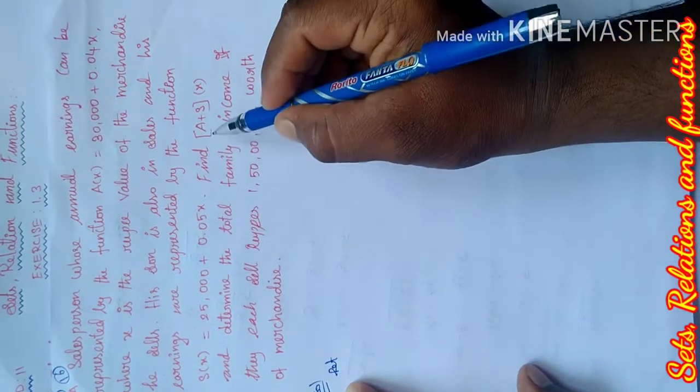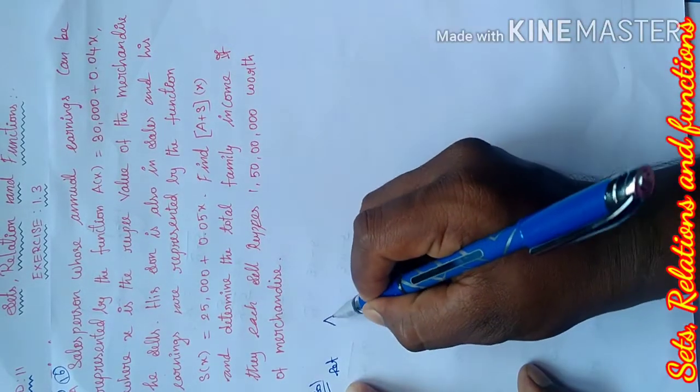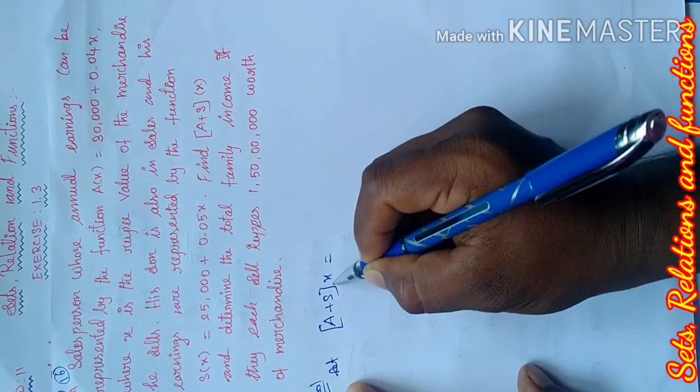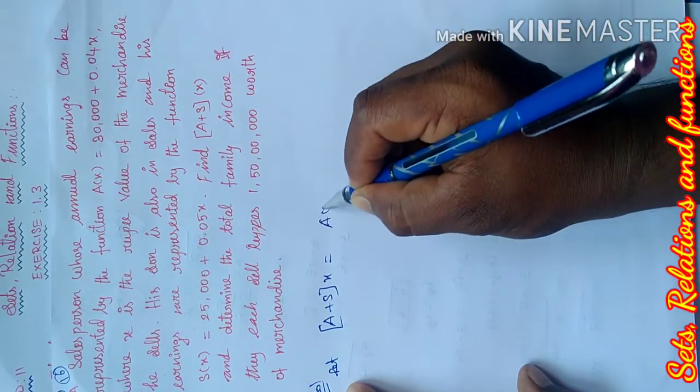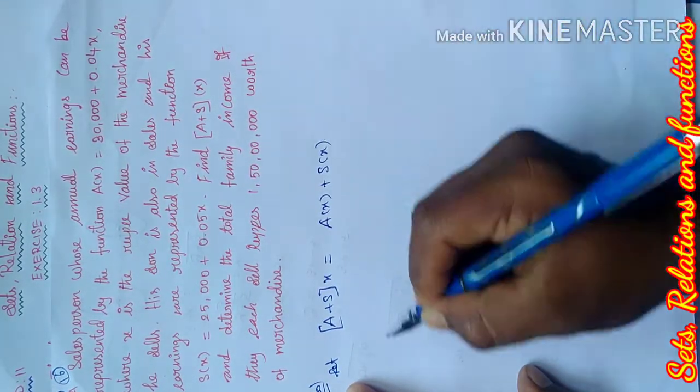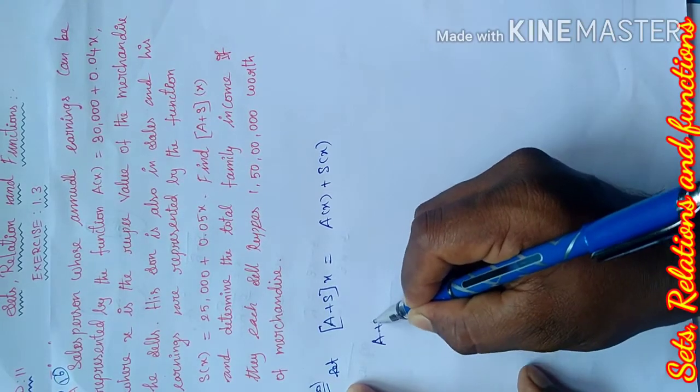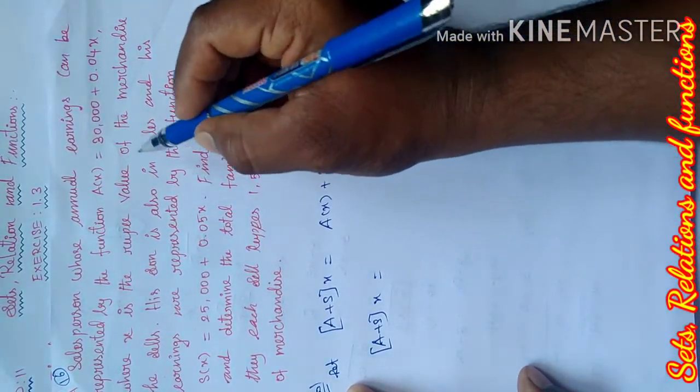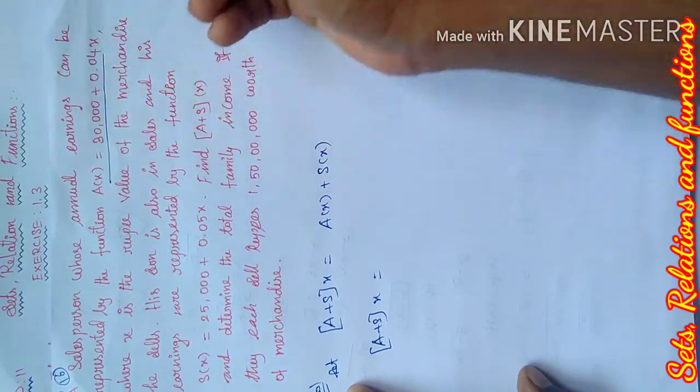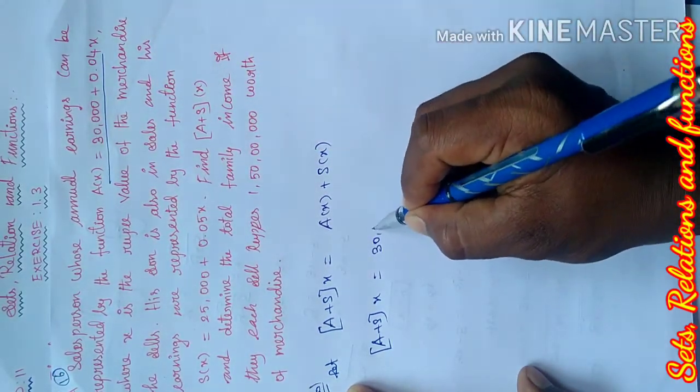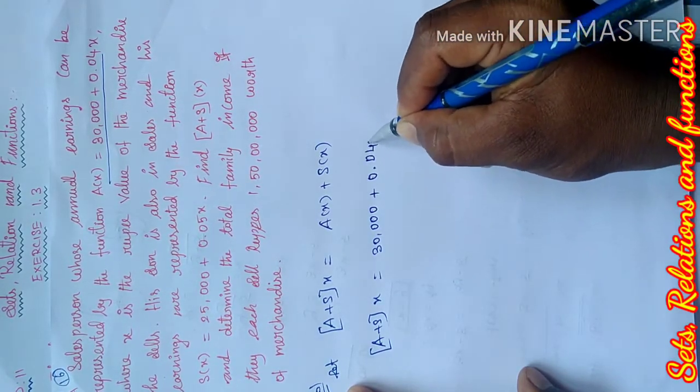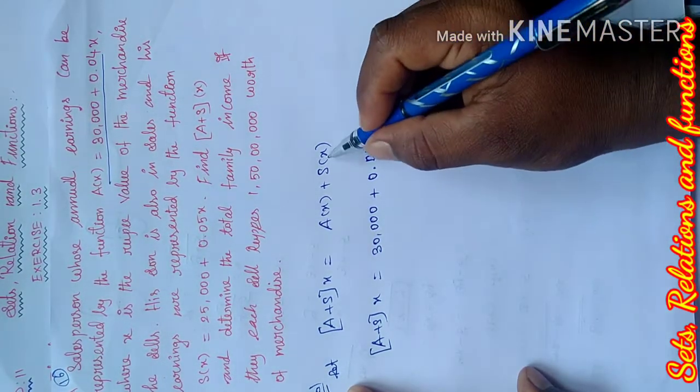To find the value of A + S(x), we apply the standard method. A plus S of x equals A(x) plus S(x). So, A + S(x) equals A(x), which is 30,000 plus 0.04x, plus S(x).